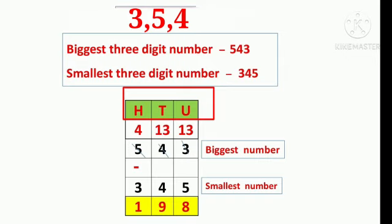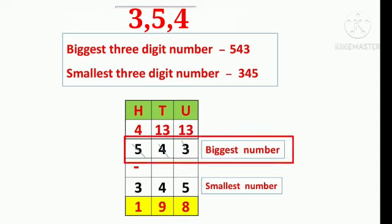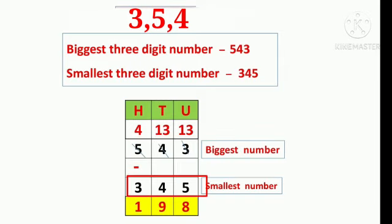We write the numbers in the columns. First we write the biggest number: 5 hundreds, 4 tens, 3 units. Minus: 3 hundreds, 4 tens, 5 units. We start subtraction from the units place.